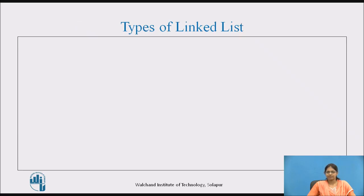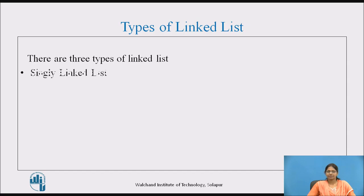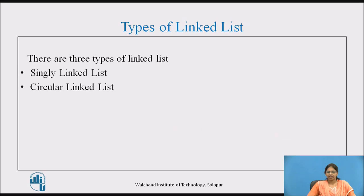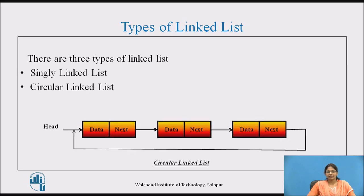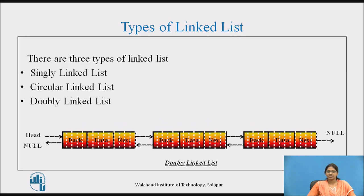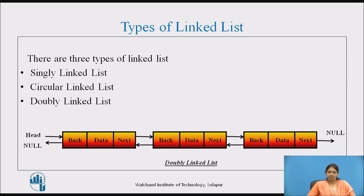There are three types of linked list: a single linked list, which consists of a single link to the next node; a circular linked list, in which null is replaced by a link to the first node; and a double linked list, which consists of two links — one link going to the next node and the other going to the previous node.